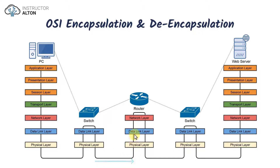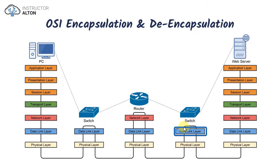The data goes back down to the physical layer and up to the router, which operates at the network layer. The router looks at the source and destination IP addresses and knows where to send the data because it's a directly connected route. It then goes back down to the physical layer and over to the second switch, which again goes up to the data link layer, looks at the source and destination MAC addresses, and determines it needs to send the data out the port to which the web server is connected. It sends it down to the wire and all the way up to the web server, decapsulating all the information down to just the data.